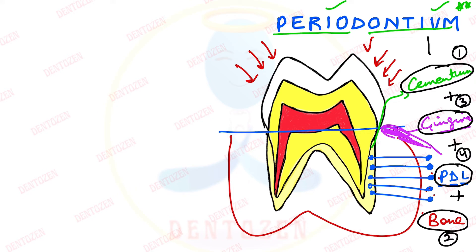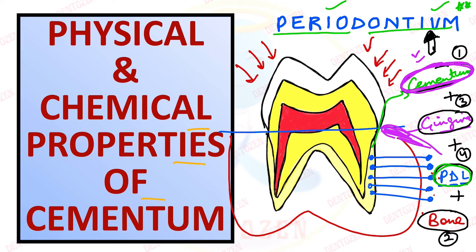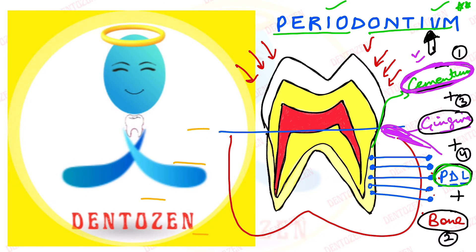These all four together are known as periodontium. We will discuss more about periodontium and periodontal ligament. But today we are going to know more about the physical and chemical properties of this tissue, cementum, that forms the outermost layer of the root of the tooth and provides attachment to the tooth. Let's start. Before starting, quickly subscribe to Dentists and if you haven't yet, do like this video.